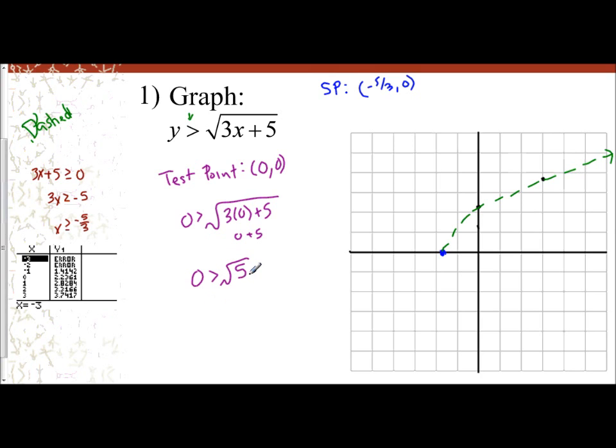I mean, the square root of 5, you know, is larger than the square root of 4, which the square root of 4 is 2. So this is going to be 2 point something. So is 0 greater than 2 point something? No. It's false. And so that means this test point of 0, 0 is not in the shaded region.